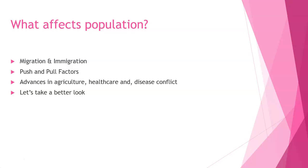Some other things that affect population: migration, immigration, emigration, push and pull factors, and advances in agriculture and health care, as well as disease and conflict. As there are agricultural advances and advances in health care, your population tends to get larger. If you have advances in agriculture, you can feed more people. Better health care — for example, once people realize that washing hands stops the spread of germs — means people live longer, which helps the population grow. Disease and conflict are negatives that will decrease your population.